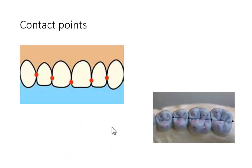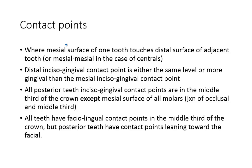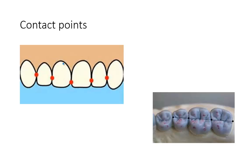The reason we divide teeth into thirds is so we can accurately describe where contact points are. A contact point is where the mesial surface of one tooth touches the distal surface of the adjacent tooth — or in the case of centrals, where the mesial surfaces of the two centrals touch each other. For example, the contact point between the maxillary central and lateral is where the distal surface of the central touches the mesial surface of the lateral.